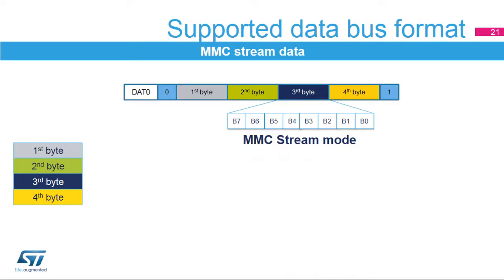In MMC stream mode, the data path sends a stream over one pin, SDMMC D0. First, a start bit is generated on the bus followed by the data stream with the first-to-last bytes of the sequence. Then the end bit is appended to the stream on the bus line. In stream mode, there is no CRC, and the card will not return a CRC status after having received data.